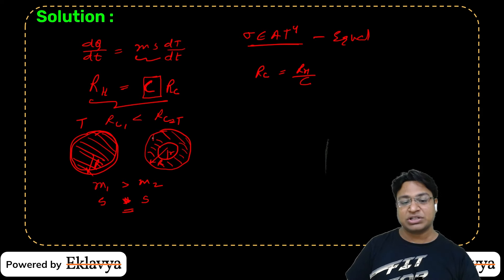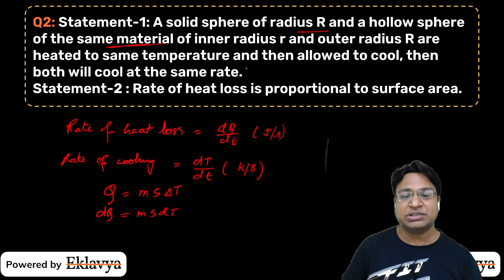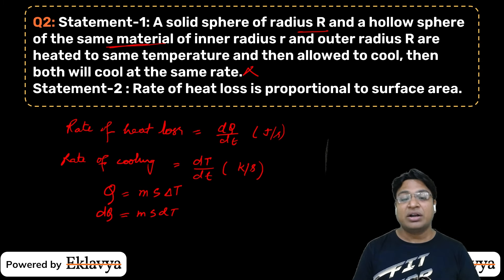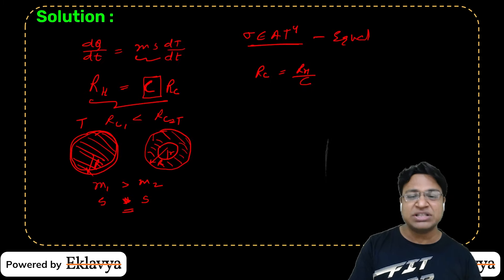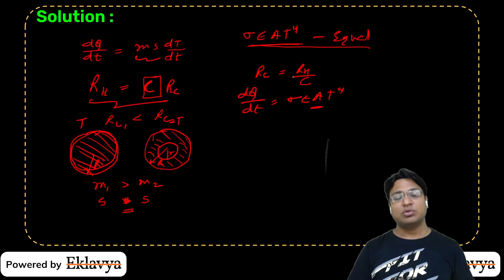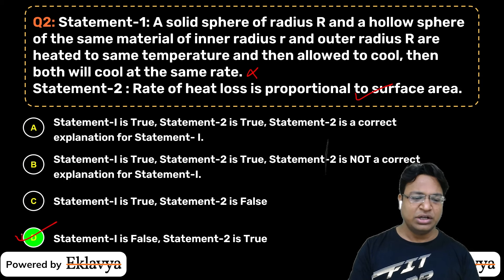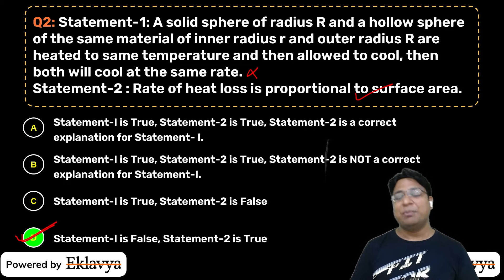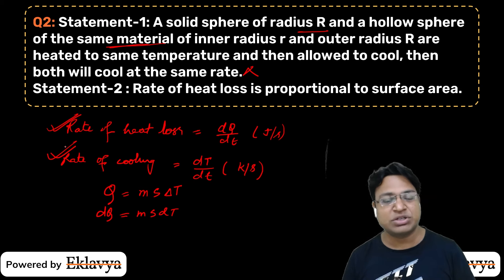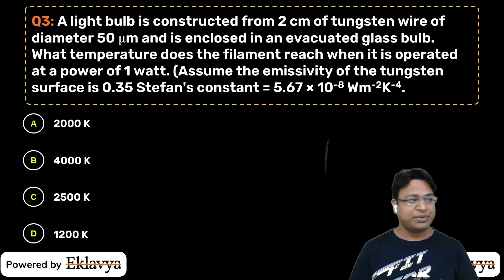Initially, both will lose heat at the same rate, but the temperature will fall at different rates. Statement 2 says the rate of heat loss is proportional to surface area — therefore the rate of heat loss will be the same, but the rate of cooling will be different. Statement 2 is correct and explains why Statement 1 is wrong. This is a beautiful question that focuses on the distinction between rate of heat loss and rate of cooling.